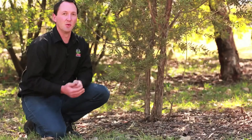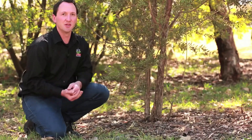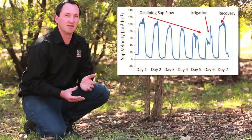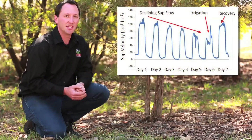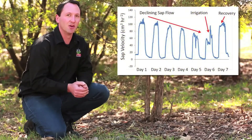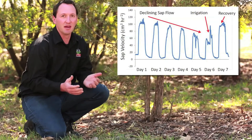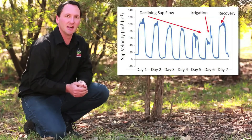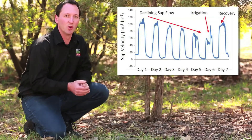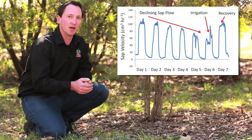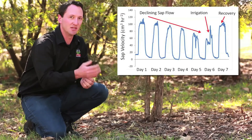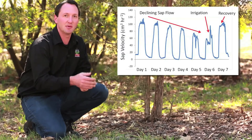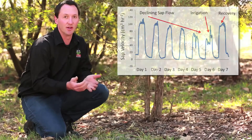If you do not water your plant, sapflow will also decline. Here is a data set over seven days. You can see peak sapflow is declining because we haven't watered the plant. On the afternoon of the sixth day we gave some water to the plant and you can see straight away sapflow increased. The next day sapflow had returned back to what it was earlier in the week.